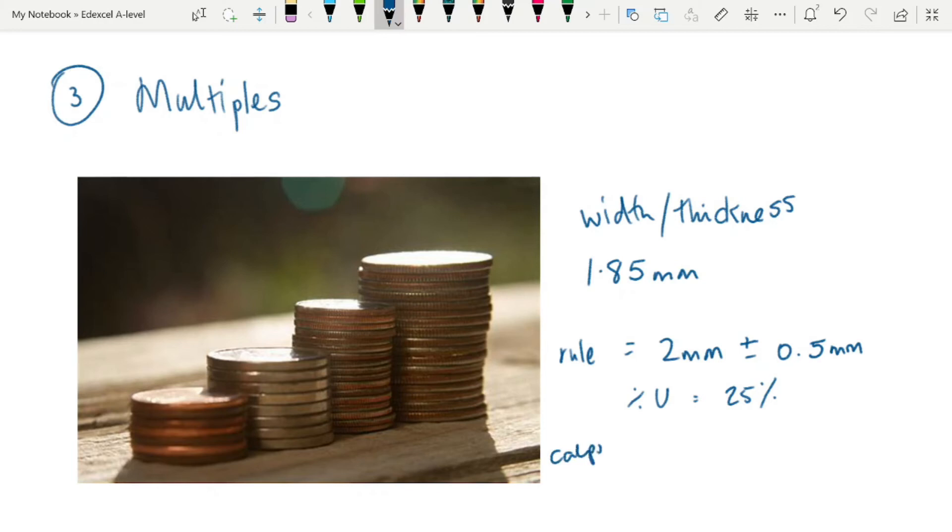What about our calipers? Well, calipers would measure it as 1.9 millimeters. And again, its uncertainty is half its smaller scale division, so you end up with 0.05 millimeters, giving us a percentage uncertainty of 2.6% better.